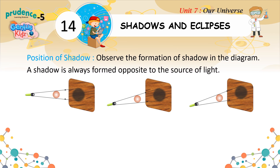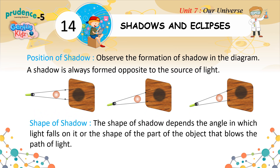Observe the formation of shadow in the diagram. A shadow is always formed opposite to the source of light. The shape of a shadow depends on the angle in which light falls on it, or the shape of the part of the object that blocks the light.